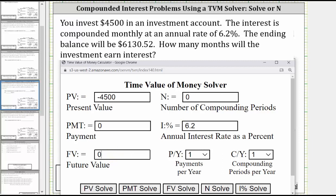The future value is a desired balance of $6,130.52 and therefore the future value is positive, 6,130.52.